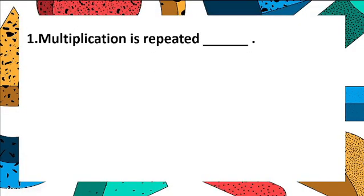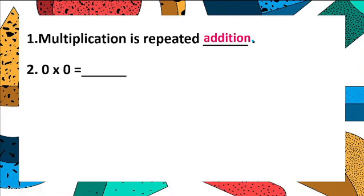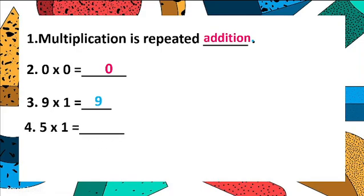Test your understanding. First question: multiplication is repeated addition. Second: 0 multiply by 0, you get the product 0. Third: 9 ones are 9, and 5 ones are 5. Also, 1 five is 5 and 1 nine is 9. Fifth: 999 multiply by 0, you get the product 0.